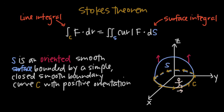First, we need to say that s is an oriented smooth surface. When we say oriented, we mean that it has a direction in terms of the way it faces — it faces up or it faces down. Normally we want it to face up, but it really depends on the relationship with the direction of the curve c. Either way, the surface s has to have an orientation, so it's an oriented smooth surface bounded by a simple closed smooth boundary curve c.